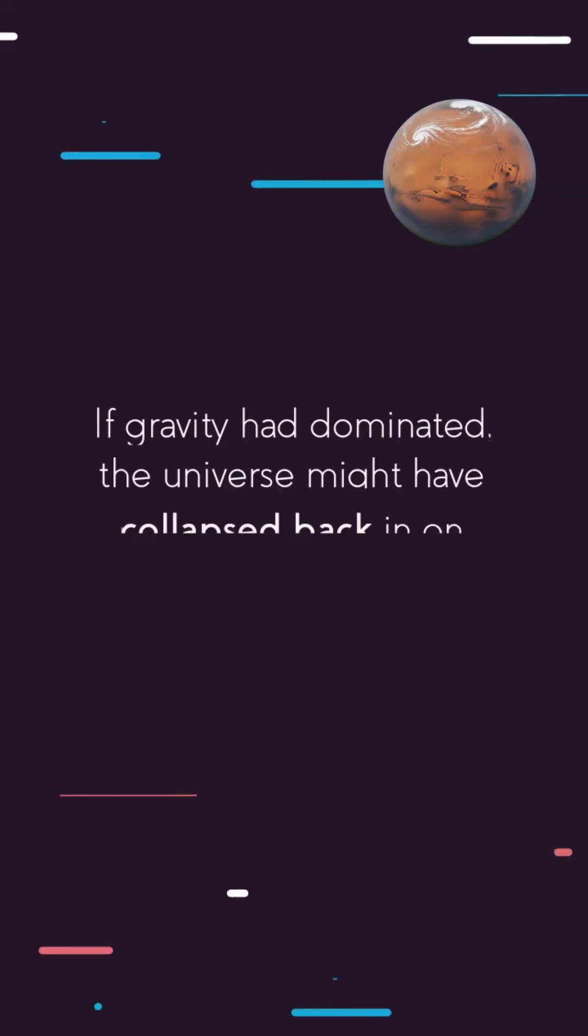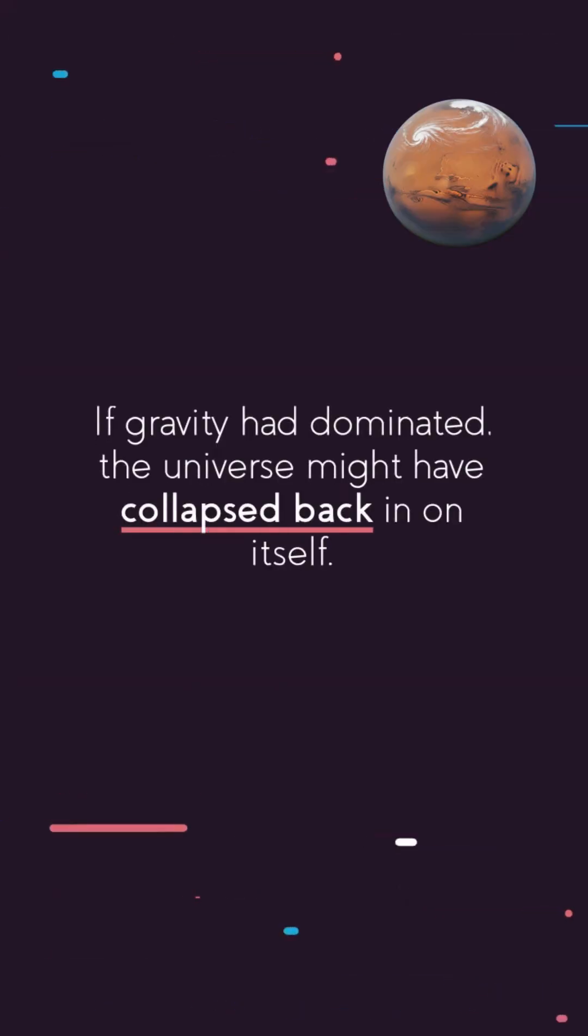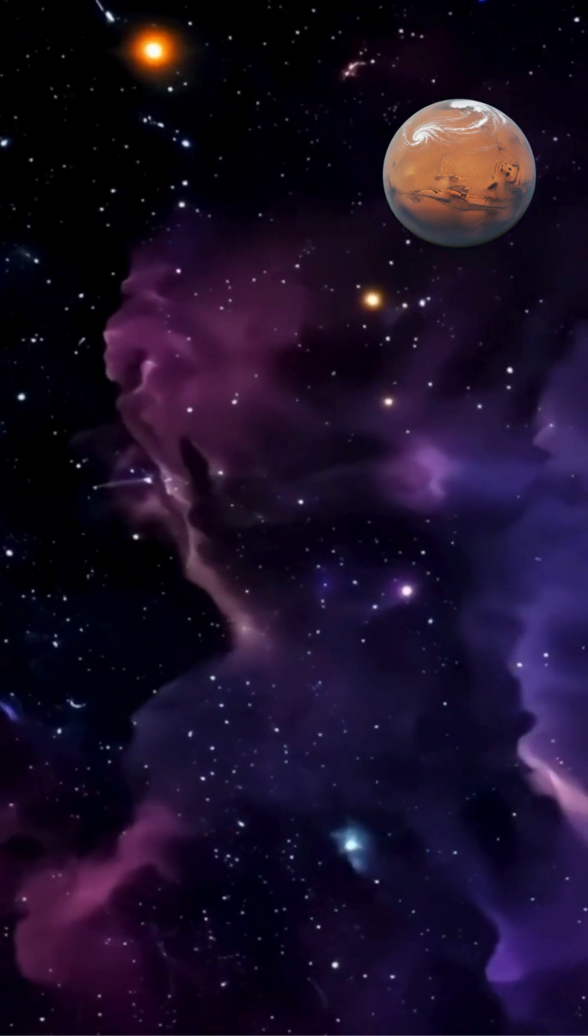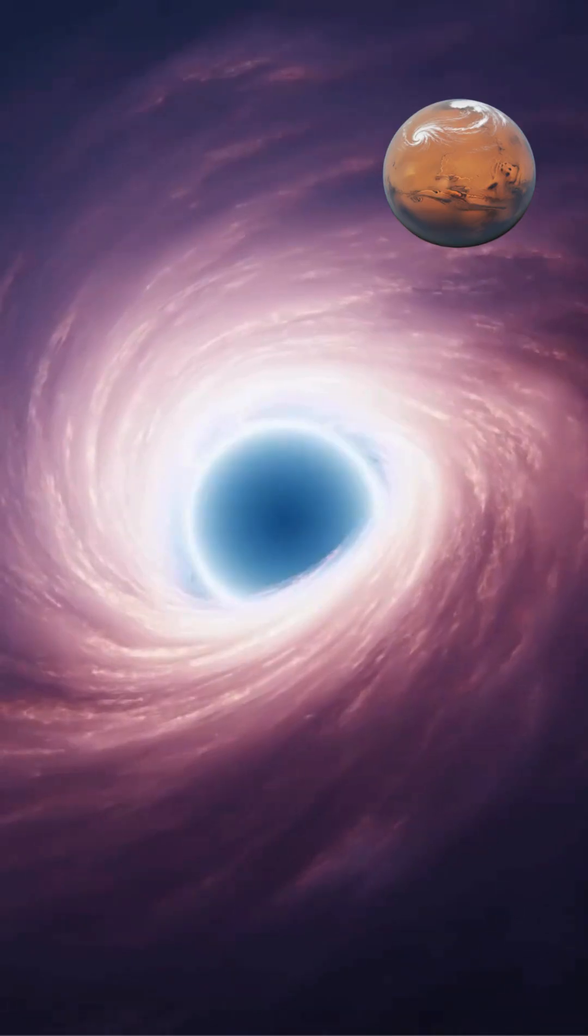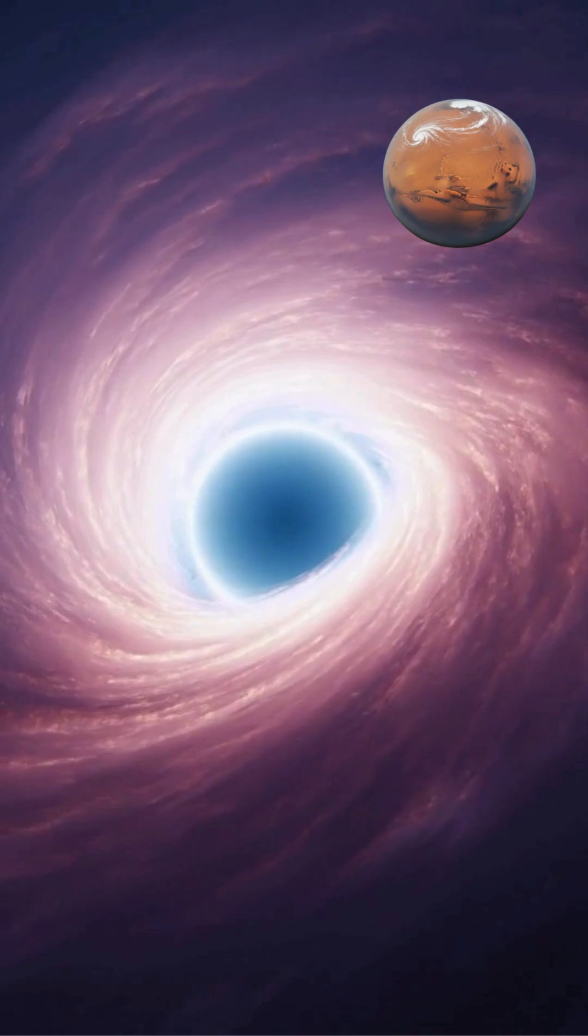If gravity had dominated, the universe might have collapsed back in on itself. If dark energy were stronger, matter wouldn't have had time to clump into galaxies. The current balance allows for a structured, evolving cosmos.